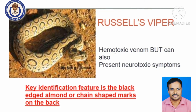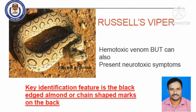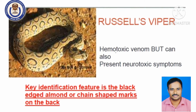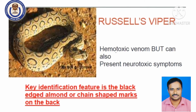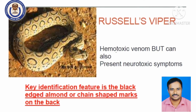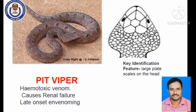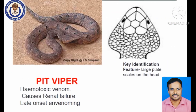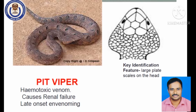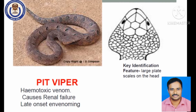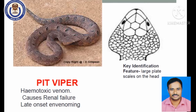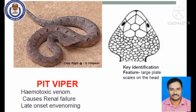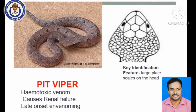Russell's viper has hemotoxic venom but sometimes also produces neurotoxicity. The cobra produces primarily neurotoxicity. The pit viper also produces hemotoxicity, causing cardiotoxicity. Hemotoxic venom can cause renal failure during the late onset of envenomation.